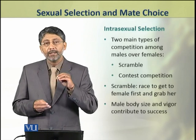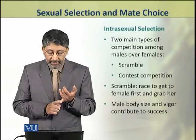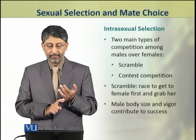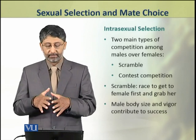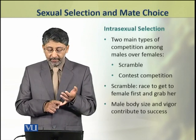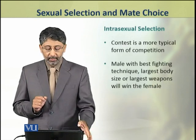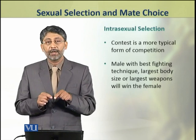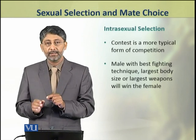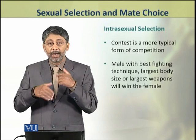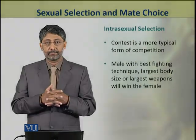There are two main types of competition among males over females: scramble and contest competition. Scramble is simply a race to get the female first and grab her; male body size or vigor may contribute to success. Contest competition is a more typical form of competition, in which males with the best fighting skills and techniques, largest body size, or largest weapons will win the mate.